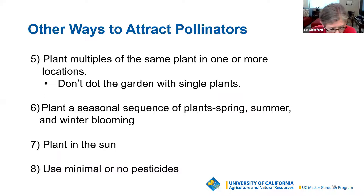People ask what to plant in spring. In my experience, ceanothus, manzanita, rosemary, and lavender are about the first things to come in spring. And then in the fall, gaillardia, coneflower, and asters are some possibilities.